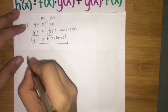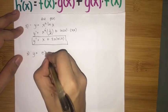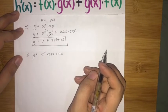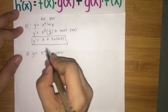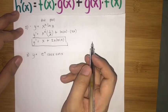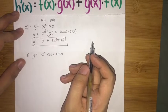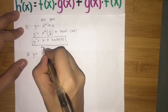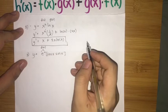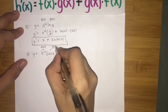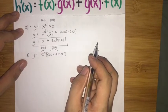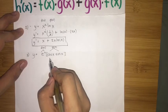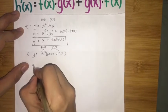Now let's try a tricky one. Let's say y equals e raised to x times cosine x times sine x. They are products of not just two different functions, but three: e raised to x, cosine x, and sine x. We can still apply the product rule by grouping: let e raised to x be f of x, and group cosine x times sine x as g of x. When we differentiate g of x, we will apply the product rule again since it is itself a product of two functions.